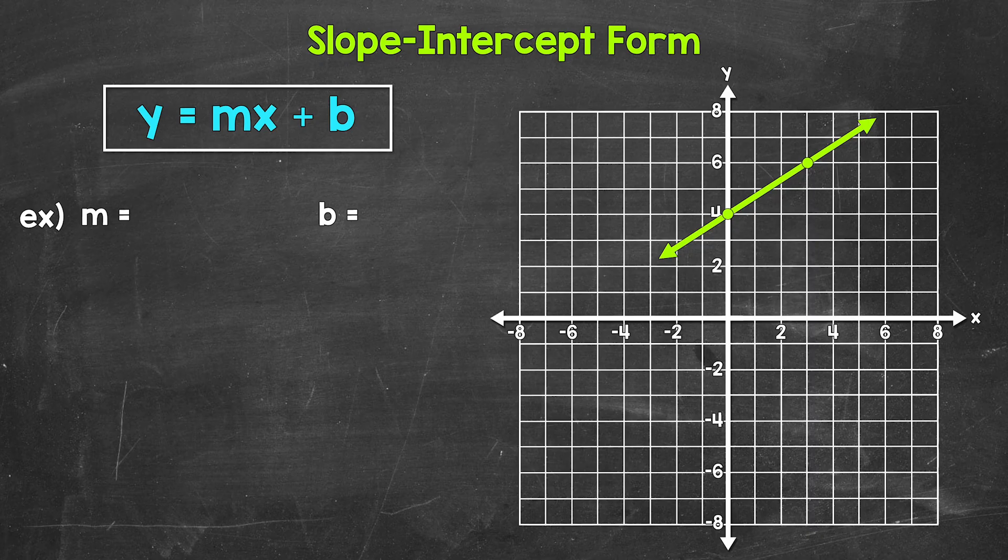So looking at number one, let's start by finding the y-intercept. Then we will find another point on the line and determine what the slope is. And for this example, you can see the two points that we are going to use. They've already been marked. I plotted points there.